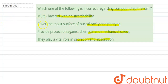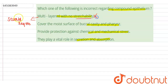Compound epithelium consists of several layers and has no stretchability, so this statement is correct and this option is incorrect as an answer. It also covers the moist surface of buccal cavity and pharynx — this statement is also correct, so this option is also incorrect as an answer.